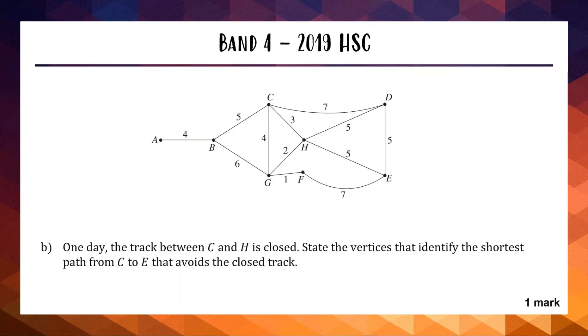The next part of the band 4 question. One day, the track between C and H, the 3 right here, has been closed. State the vertices that identify the shortest path from C to E that avoids the closed track. We're going to close off the 3 between C and H. We're trying to find the shortest possible way from C to E. If we go around the edge, we can go 7 and 5, which makes 12. If we did 4 and then 1 and then 7, we would get 12. The shortest one is going down the 4 and then up the 2 to make 6 and then the 5 makes it 11. So the 4, 2, 5 is your shortest path with a length of 11.